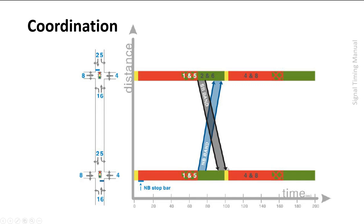The tail end of the southbound band might arrive on yellow — maybe that's still effective green. So we can actually get coordination to work in both directions, both northbound and southbound. People releasing here at the start of green are in the blue band; people releasing from the other signal at the start of green are in the southbound band. This example looks like the offset is set to zero, but the green bands are big enough that people can still arrive when the other signal is green — so both north and southbound can work.